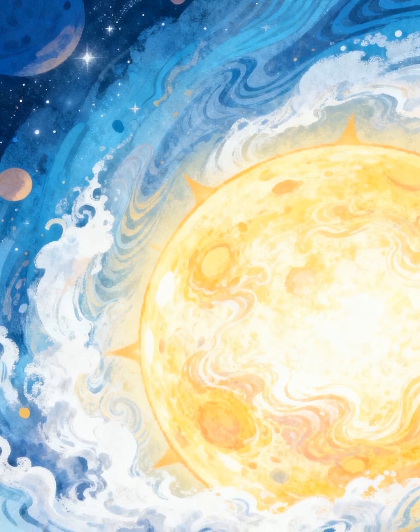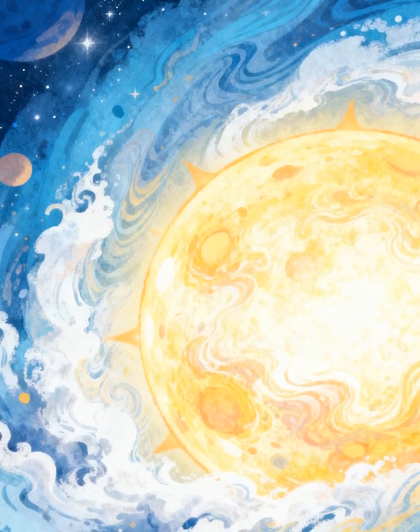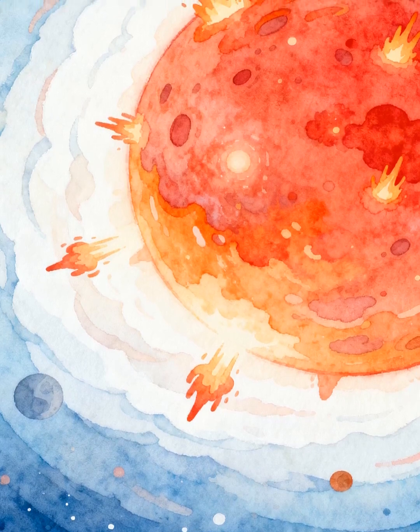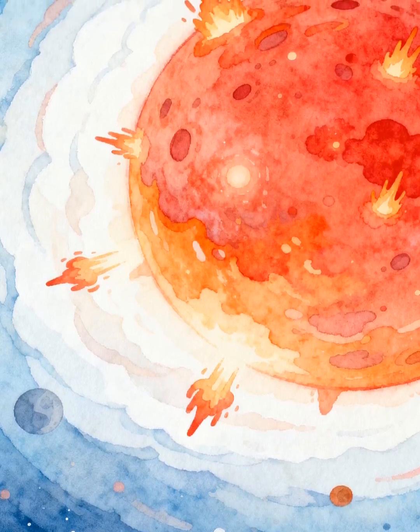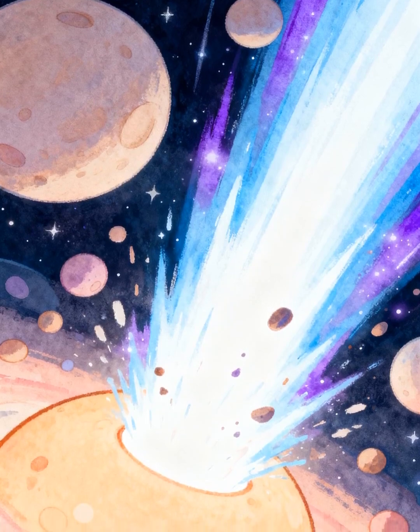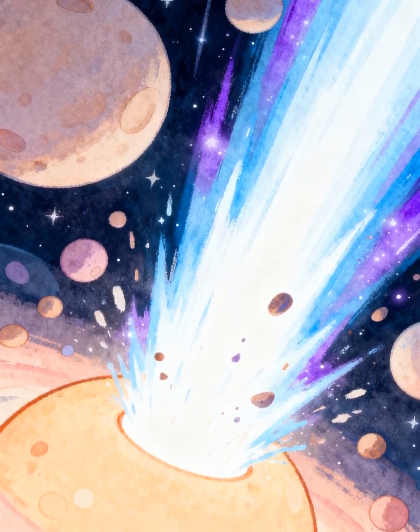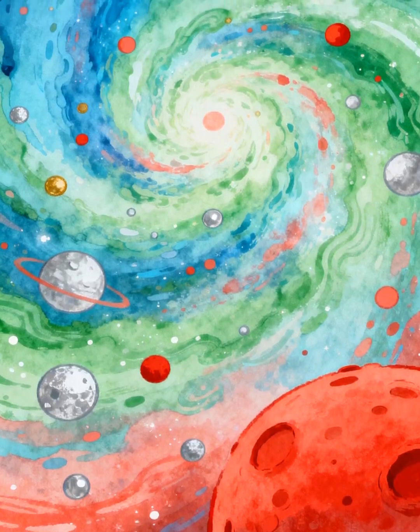Massive stars, much larger than our sun, have a more dramatic end. They burn through their fuel quickly, becoming supergiants. When the core collapses, it triggers a supernova, a massive explosion. The supernova blasts heavy elements into space, enriching the cosmos.